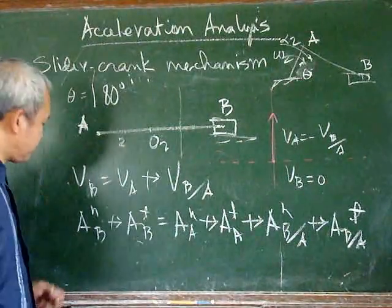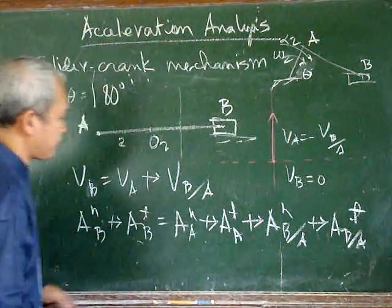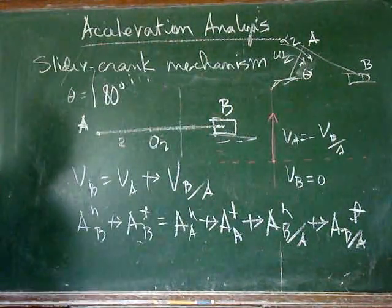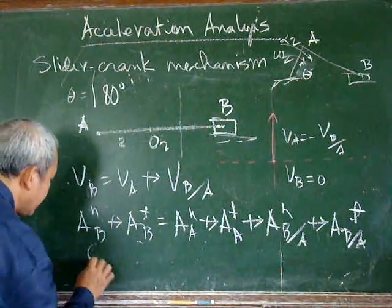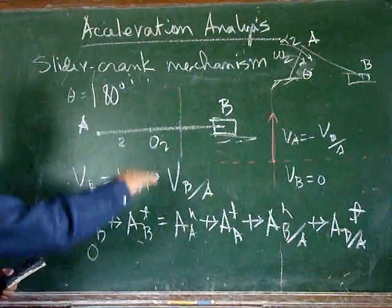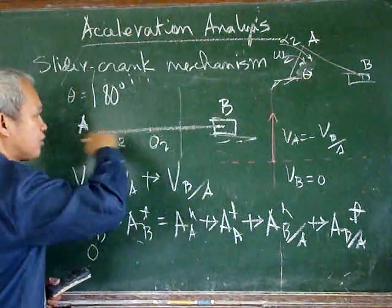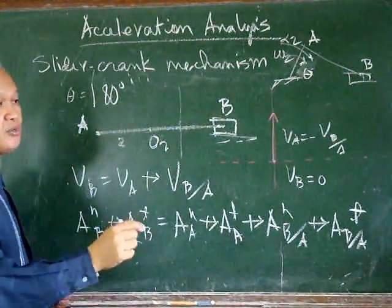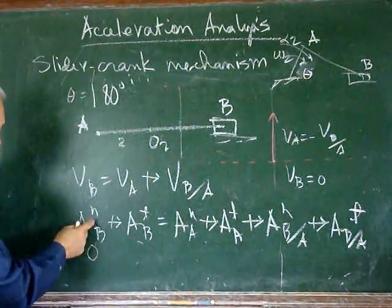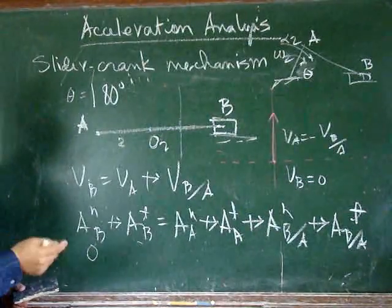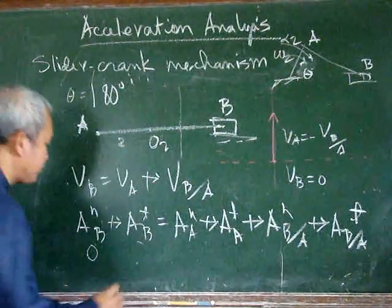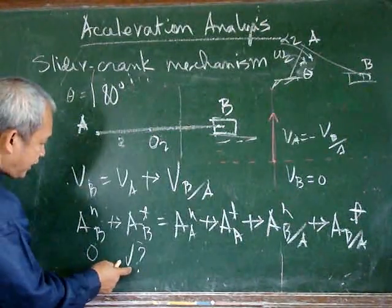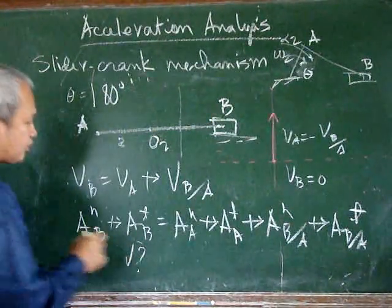With that, we can proceed with the acceleration analysis. The normal acceleration of B is equal to zero, because the slider is only moving along the horizontal — the direction of motion is not changing. So the normal component of acceleration is equal to zero, and we only have to determine the tangential component. We know the direction but not the magnitude.